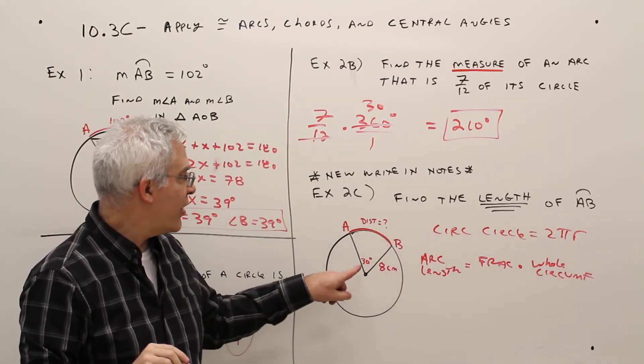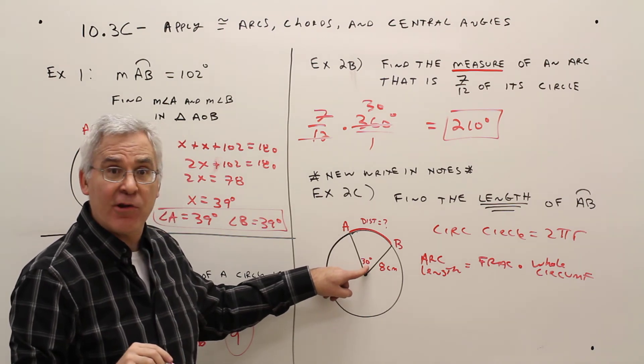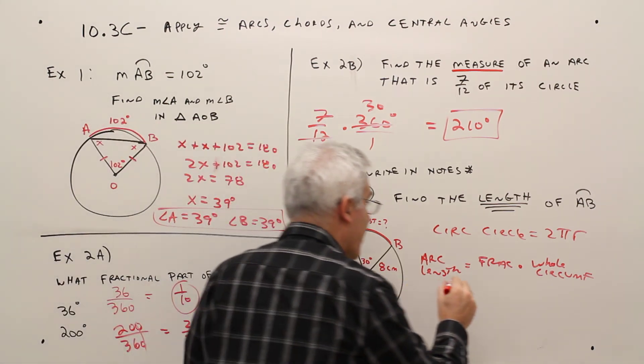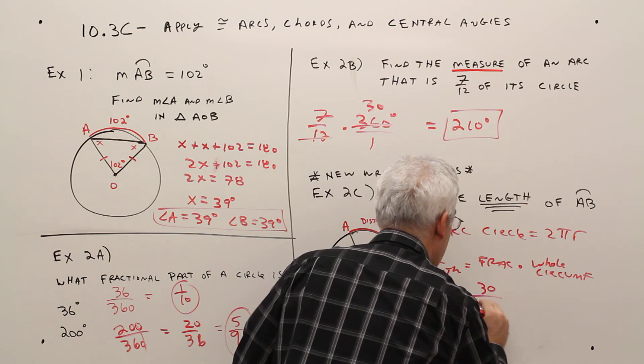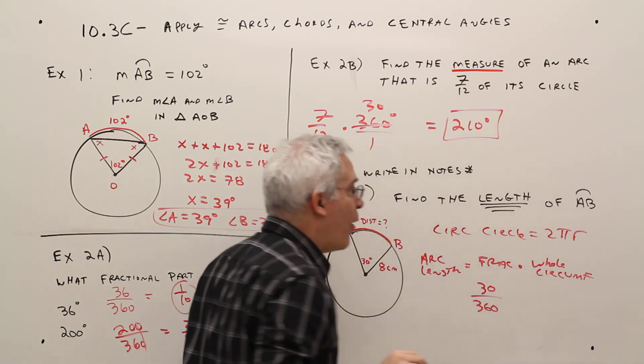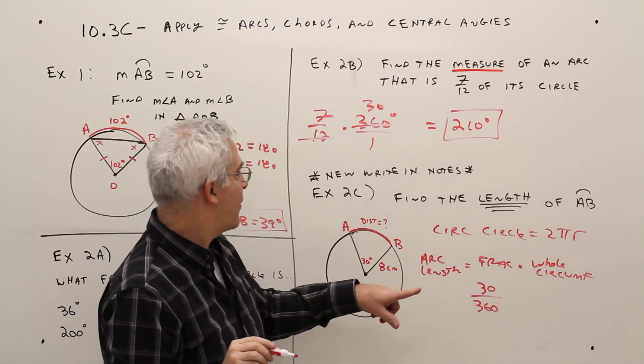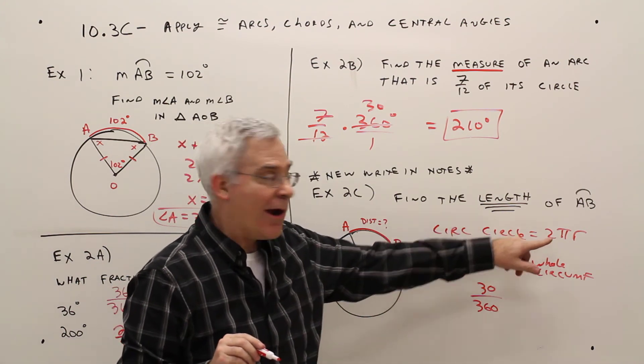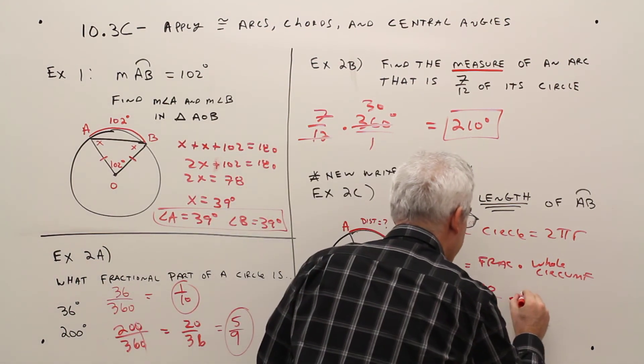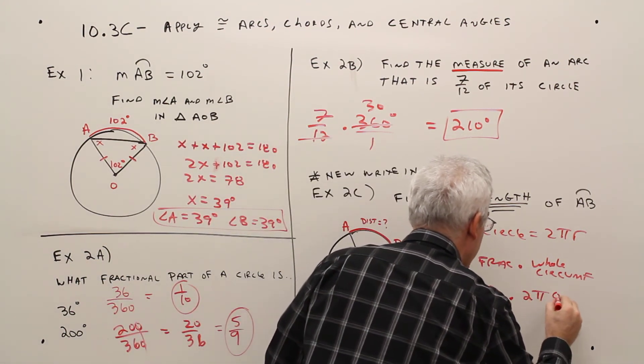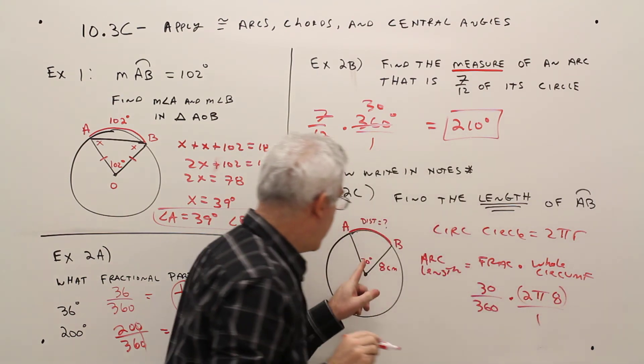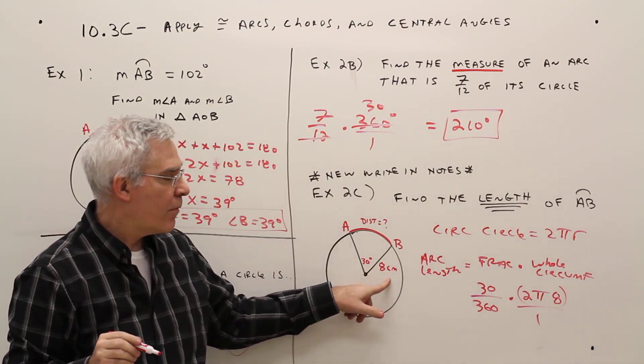So the fraction is going to be 30 degrees over 360, and the whole circumference is going to be 2 pi r. 2 pi 8.